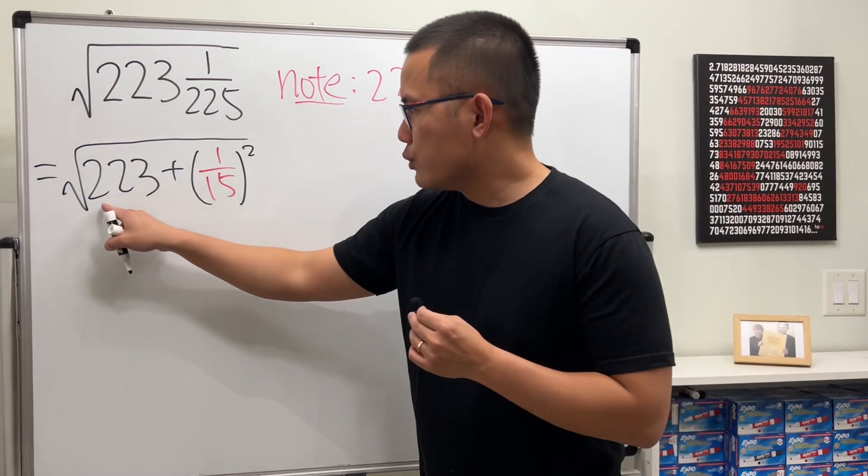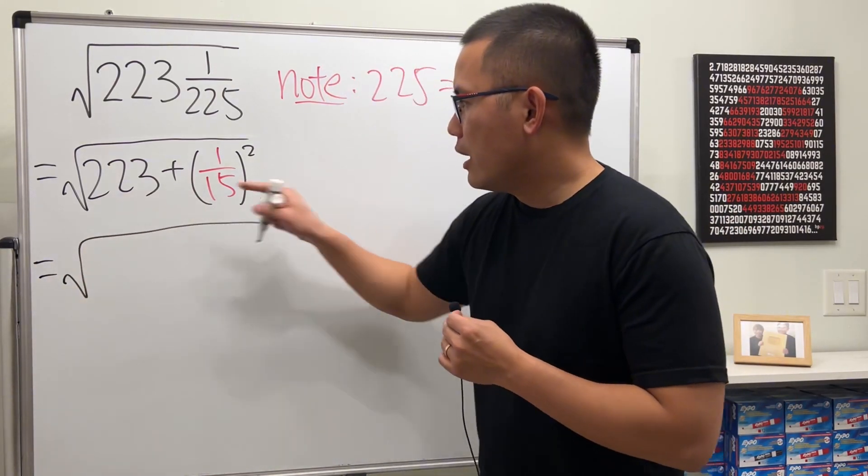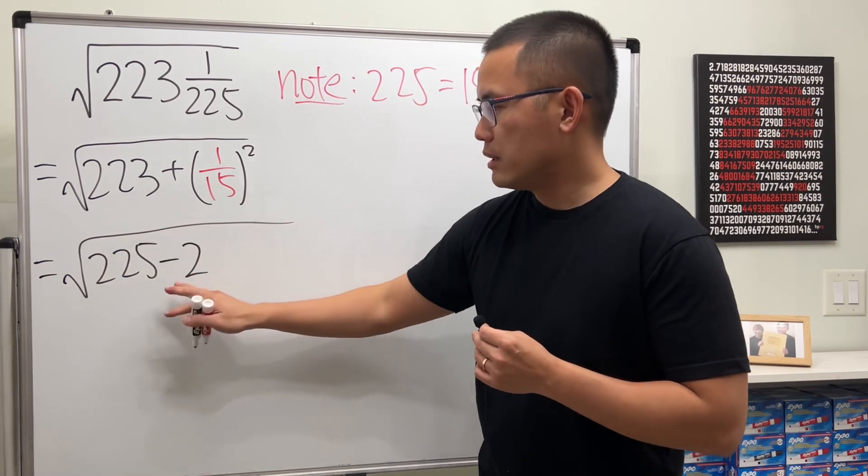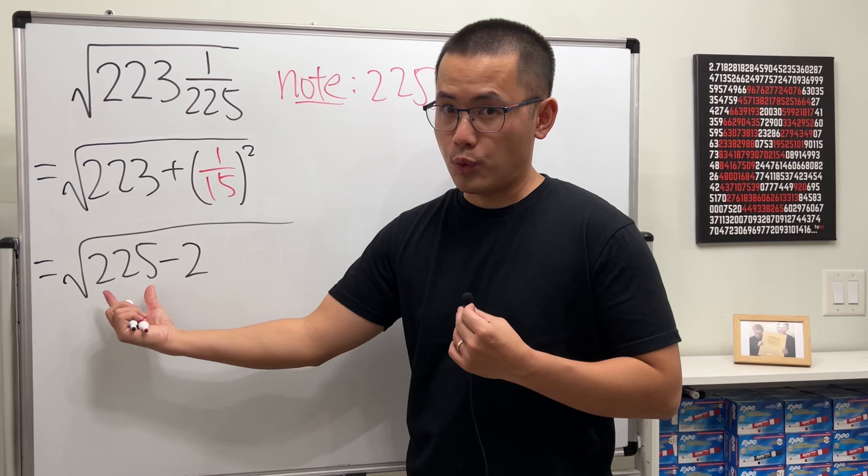So, instead of 223, let's do this. Let me look at this as 225 minus 2. Because this way, I can get a perfect square right here.